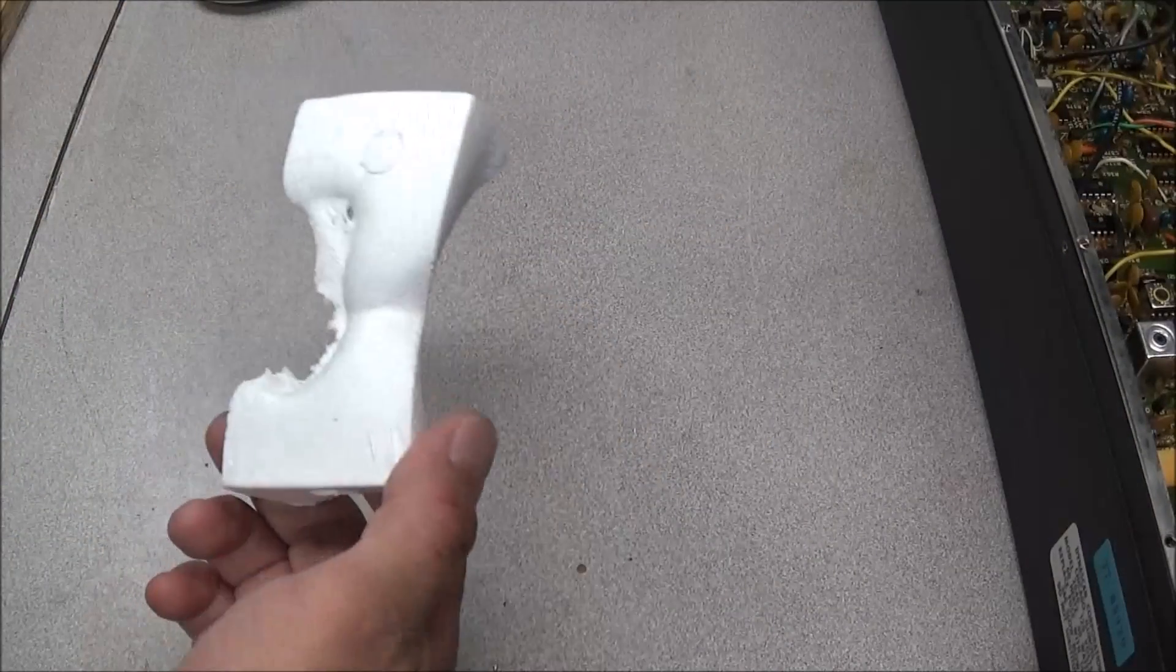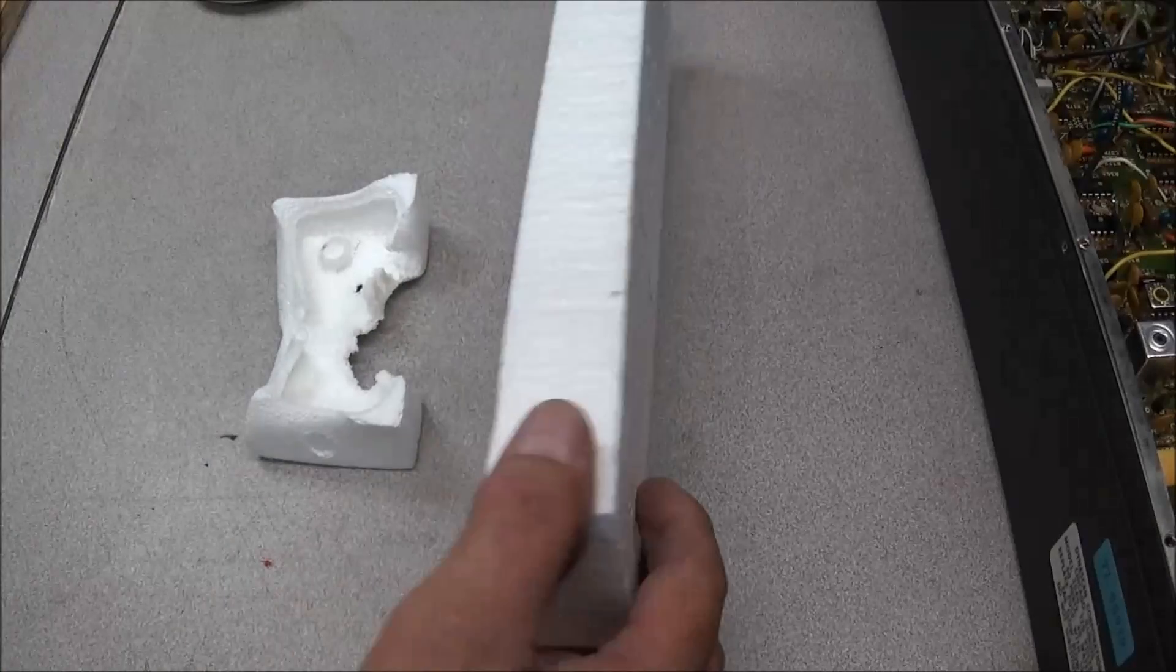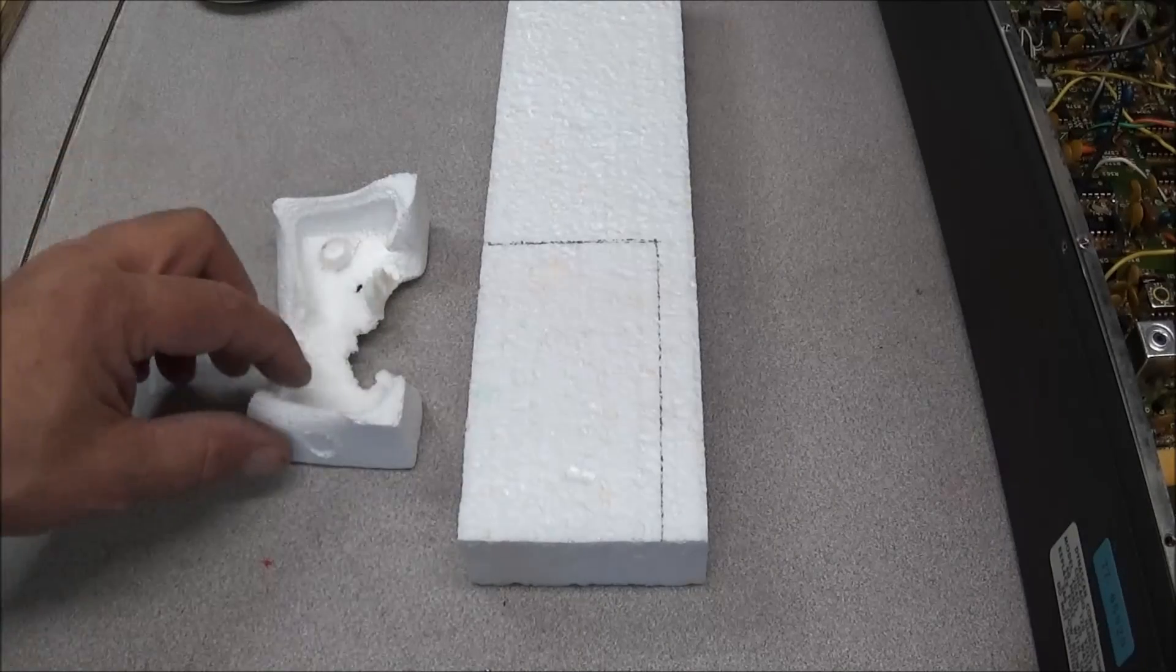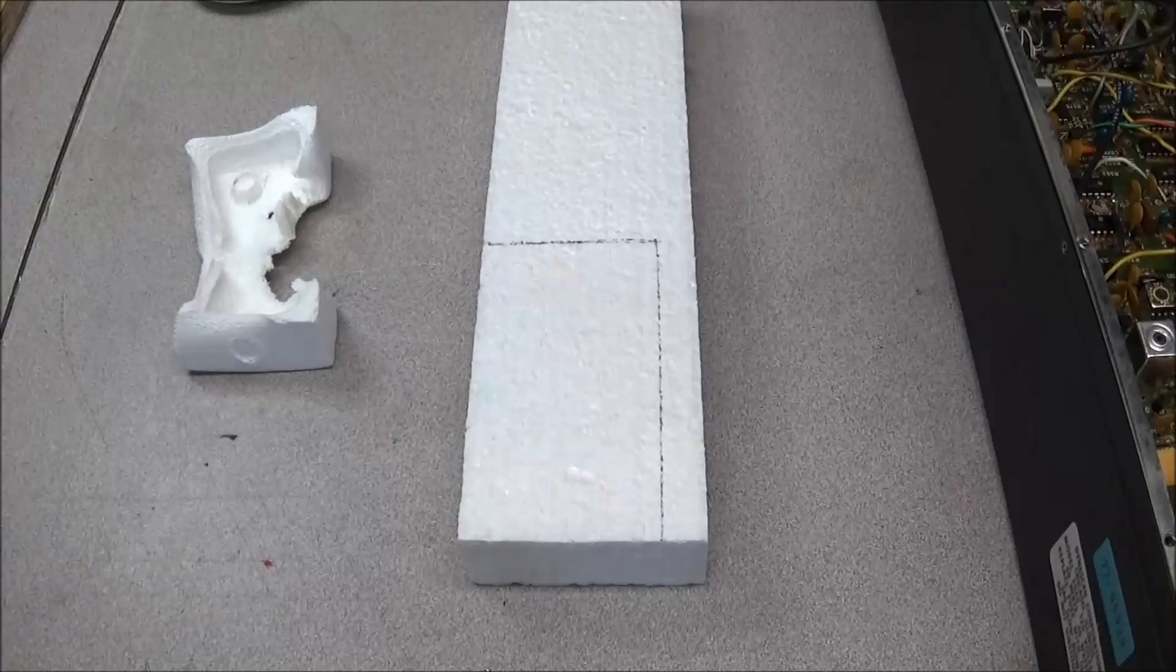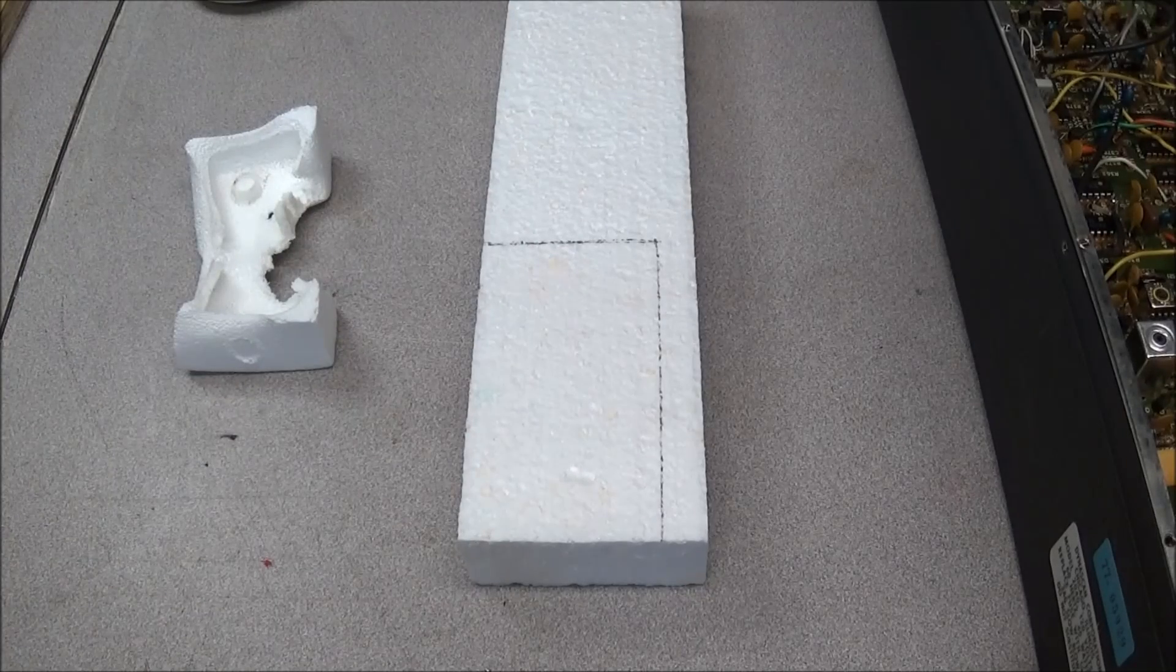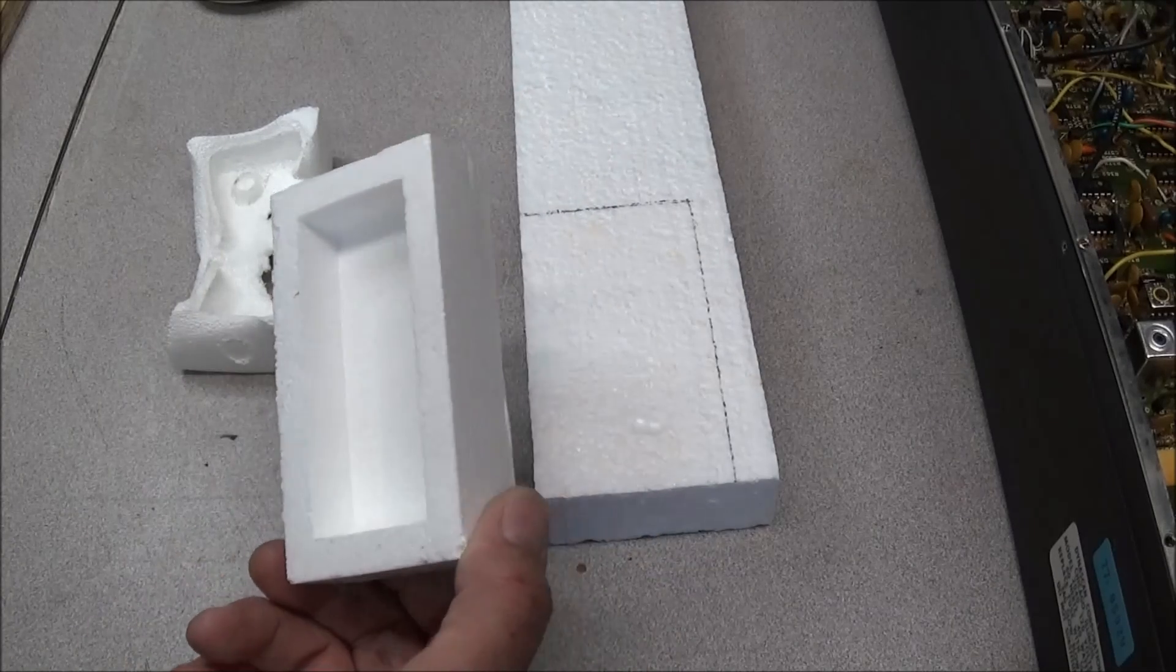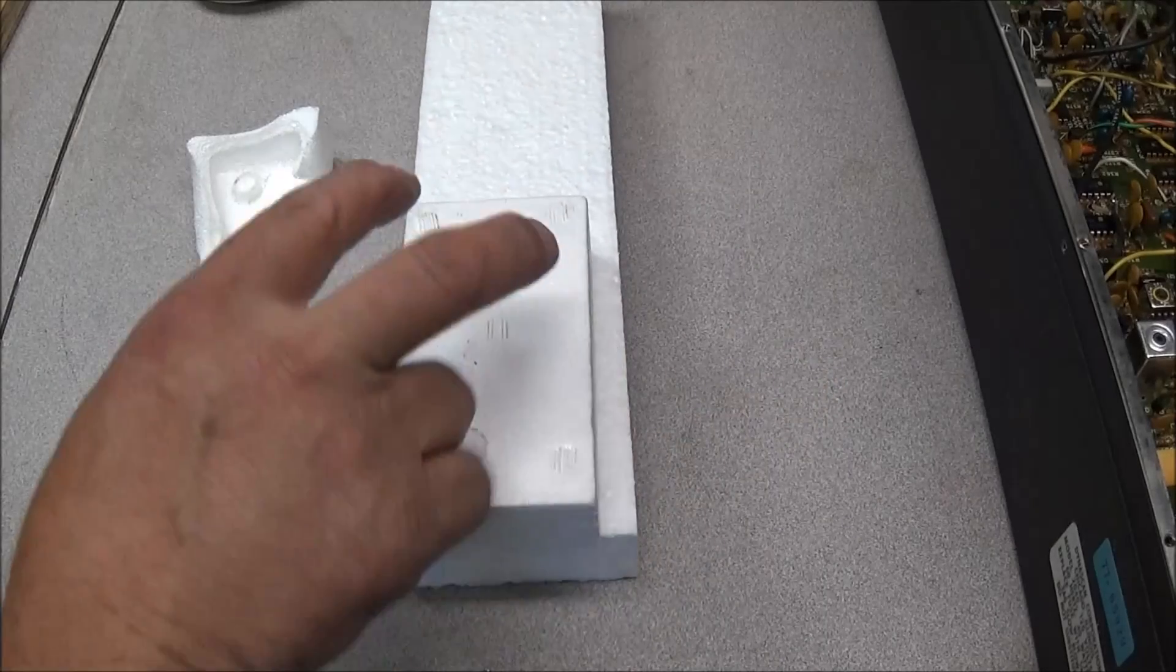So I have the old piece removed, and I have a block of styrofoam that we can use to carve out our new piece so we can put this in and keep our crystal oven at a correct temperature. Now this is the one out of another unit, and we'll use it as our template to measure out what we need.